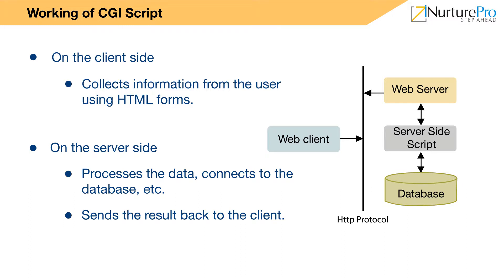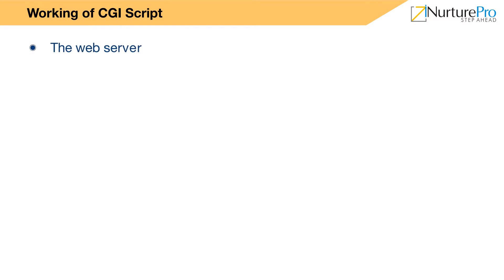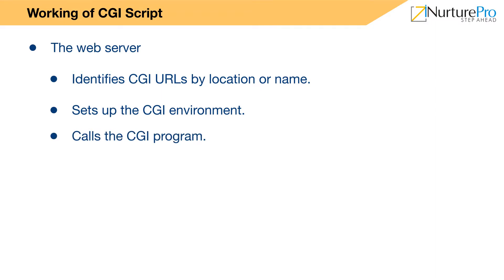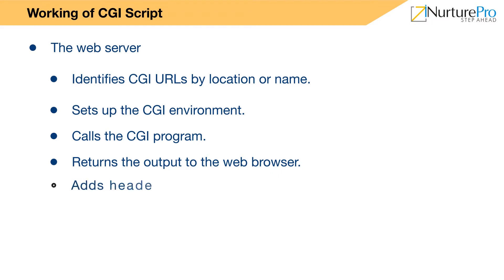Next, let's see what happens at the web server side. The web server does the following tasks: identifies CGI URLs by location or name, sets up the CGI environment, calls the CGI program, returns the output to the web browser, and adds headers.